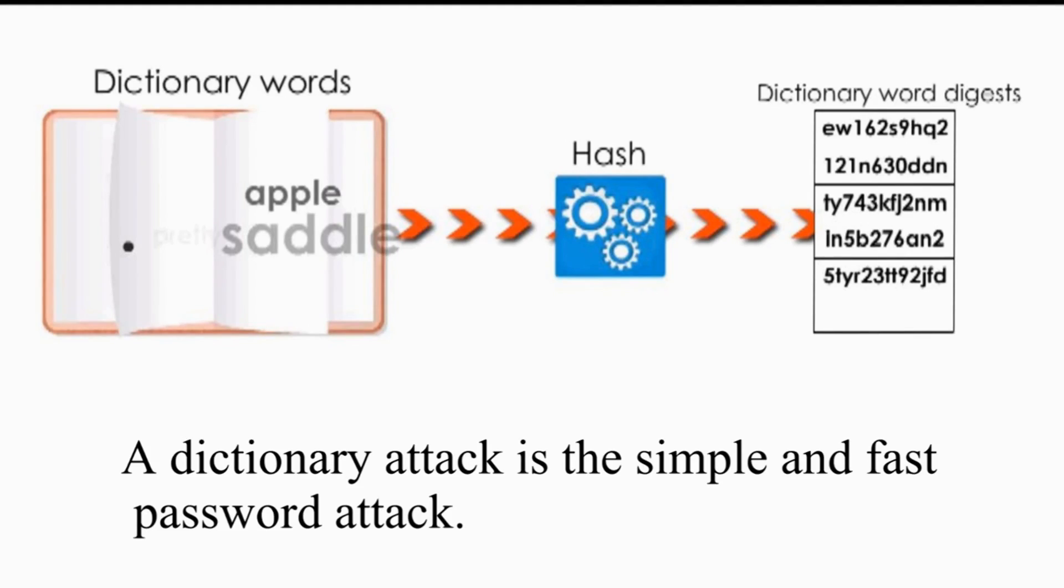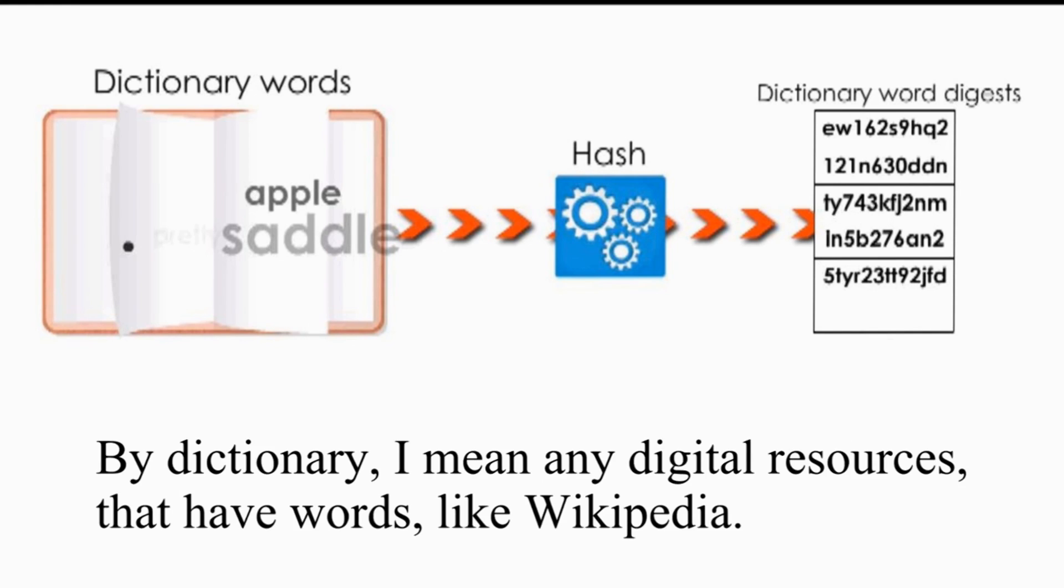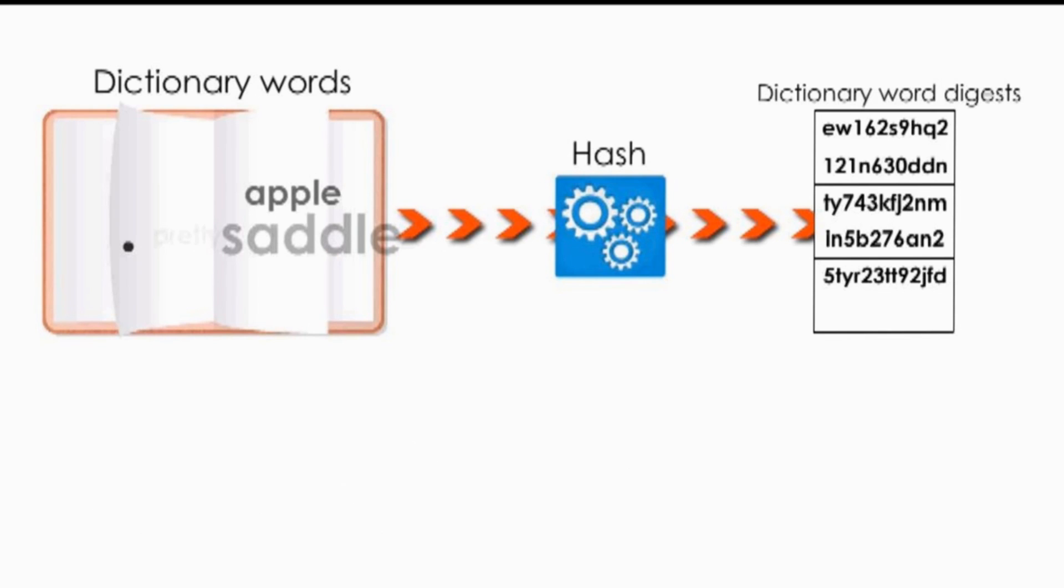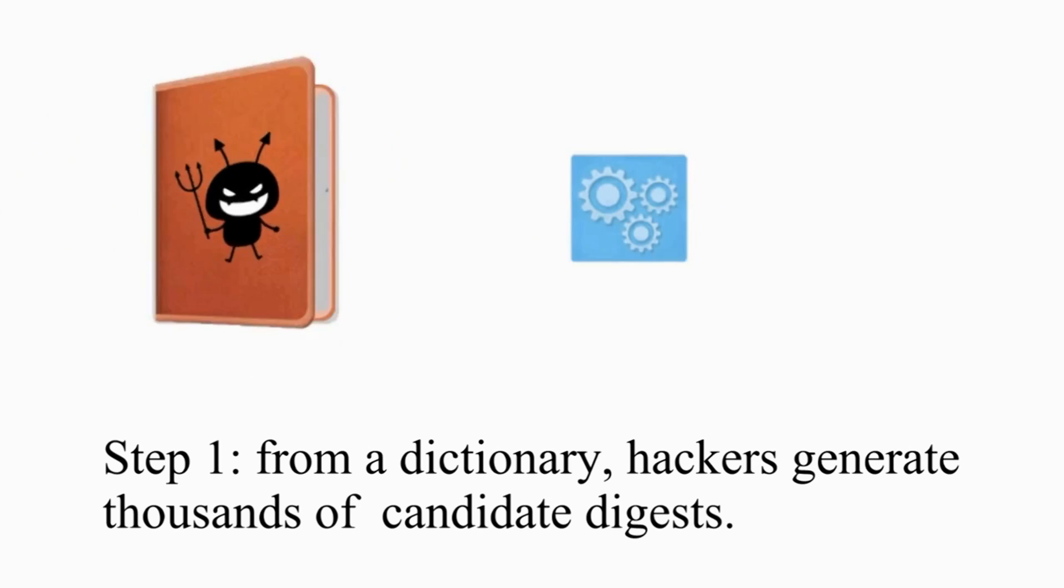A dictionary attack is a simple and fast password attack. By dictionary, I mean any digital resources that have words like Wikipedia. This is how it works. Step 1. From a dictionary, hackers generate thousands of candidate digests.